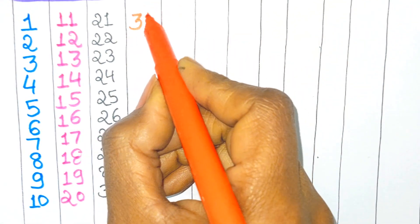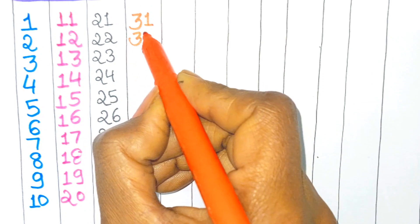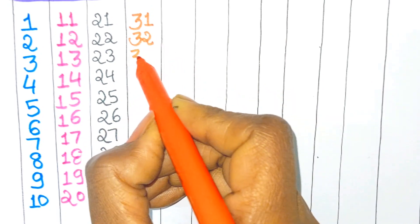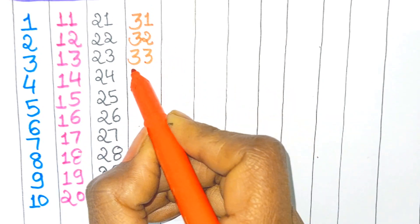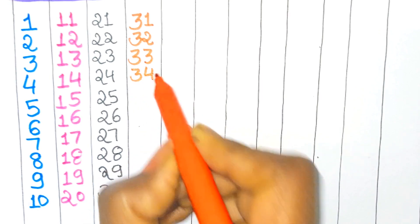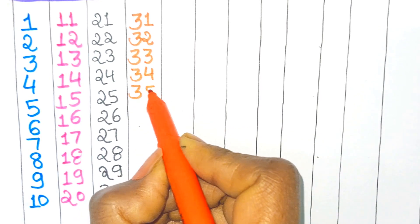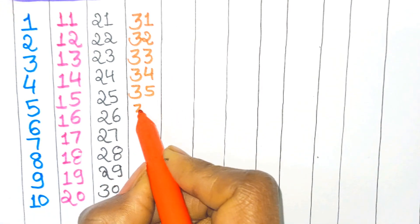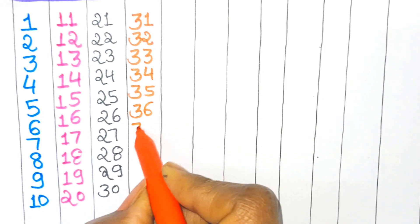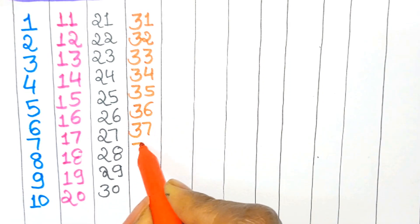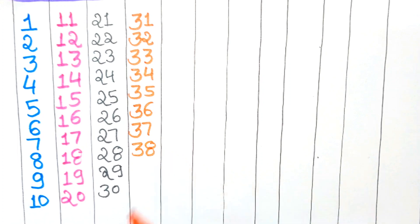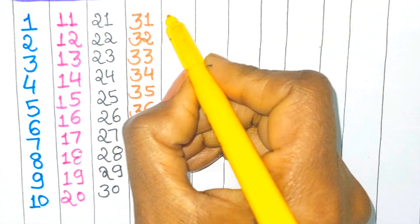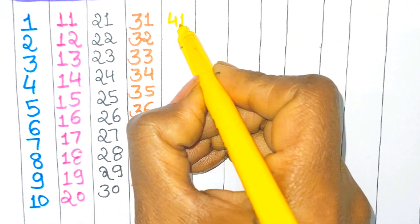Orange color. Three one - thirty one, thirty two, three three - thirty three, three four - thirty four, three five - thirty five, three six - thirty six, three seven - thirty seven, three eight - thirty eight, three nine - thirty nine, four zero - forty.